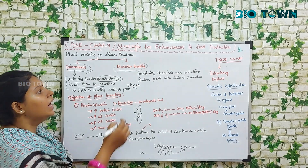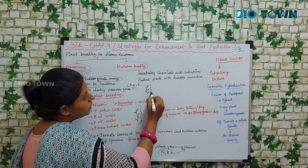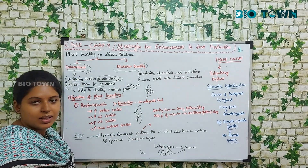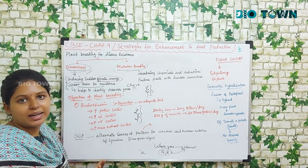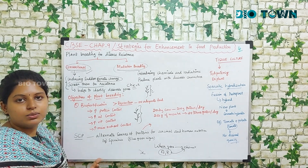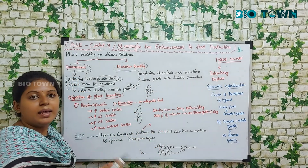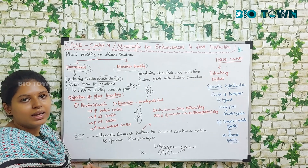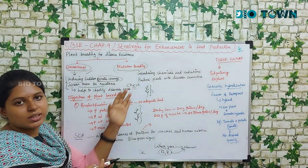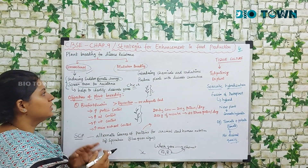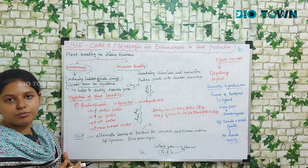Next is mutation breeding. In mutation breeding, I take a plant and introduce certain chemicals or radiation — be it gamma radiation or IR radiation — into the plant to make it acquire my own desirable characters. That is a major difference between conventional breeding and mutational breeding.